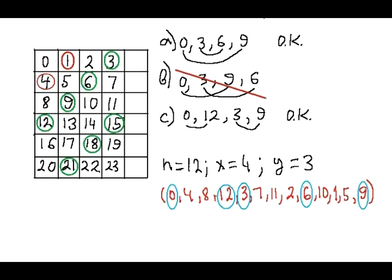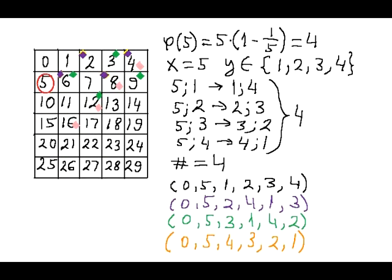An example of a beautiful labeling that contains quadruples A and C is shown below. In this labeling, n equals 12, x equals 4, and y equals 3. The last case is x equals 5.